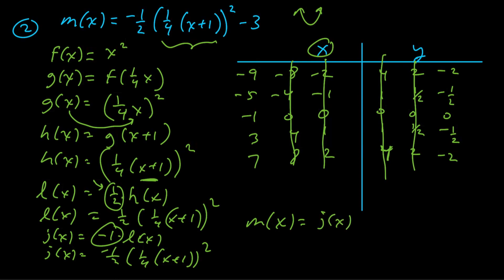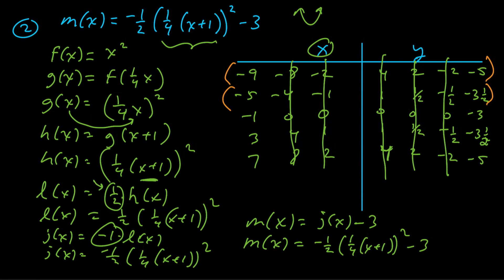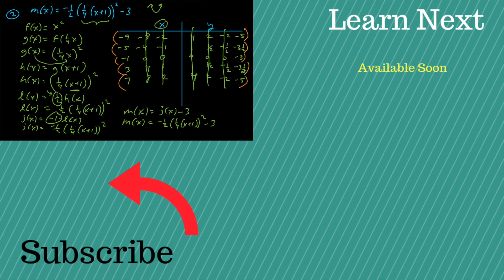Finally, m(x) = j(x) - 3. The minus 3 is not grouped with x, so it affects the y coordinates, shifting the graph down three. We subtract 3 from all y coordinates. The resulting coordinates are (-9, -5), (-5, -3½), (-1, -3), (3, -3½), and (7, -5). Plot those points and you'll get a good sketch of the final graph.